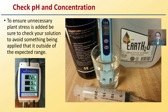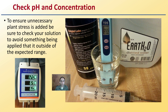Also, check the pH and concentration of anything that you're adding. To ensure no unnecessary plant stress is introduced, be sure to check your solution to avoid something being applied that is outside of the expected range. These blue garden monitors give you temperature, pH values, and concentrations. Also, just a quick little pen here to go through and check — it can be a great way to ensure that you're not going to give the plants any sort of stresses.